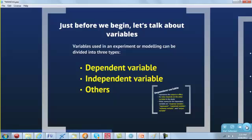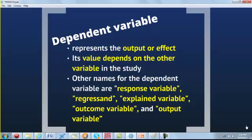Let's look at the matter of variables. We have two major types: dependent variable and independent variable. A dependent variable, like the name signifies, has a value that depends on others. For example, achievement will depend on the type of teaching method used — so achievement is a dependent variable. The dependent variable represents the output or effect. Other names include response variable, regressant, explained variable, outcome variable, and output variable.